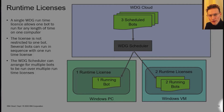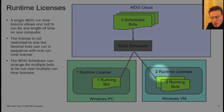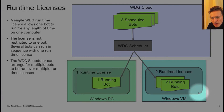In the next part of this presentation I'm going to talk about scheduling bots on multiple computers and management of the runtime licenses. Here in this slide I've got a conceptualized view of the WDG runtime and how it manages multiple bots over multiple runtimes. We have three scheduled bots all scheduled at the same time, and we have two available runtimes: a Windows PC with one runtime license and a Windows VM with two runtime licenses. We can send two of those bots to the Windows VM to run in parallel and the third to the Windows PC - three bots doing different things on two separate computers.